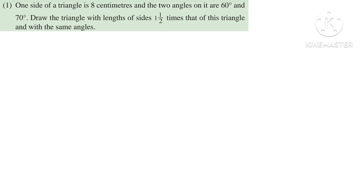One side of a triangle is 8 cm and the two angles on it are 60 degrees and 70 degrees. Draw the triangle with length of sides one and a half times that of this triangle, with the same angles.